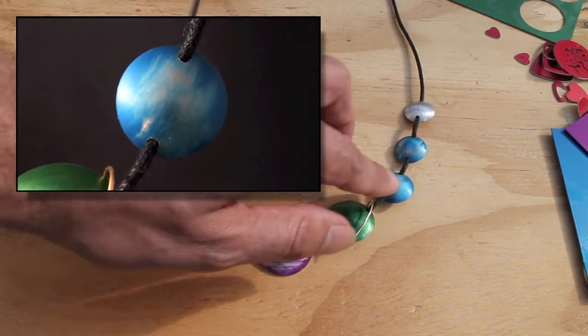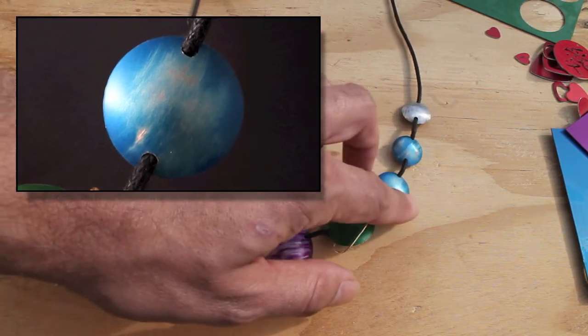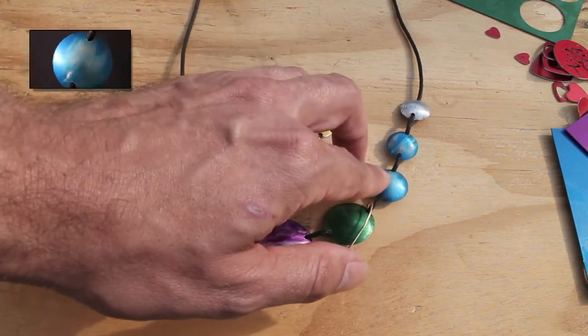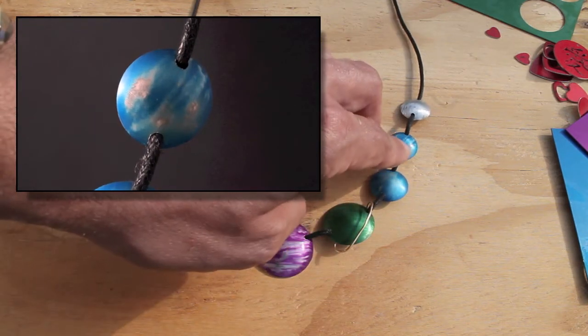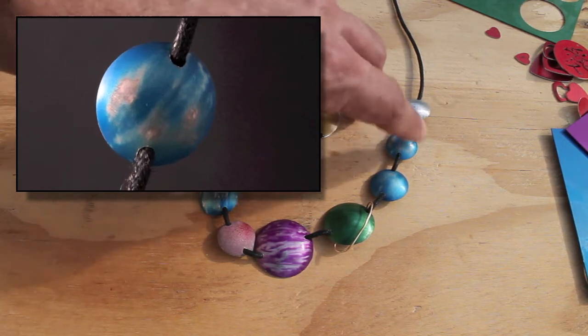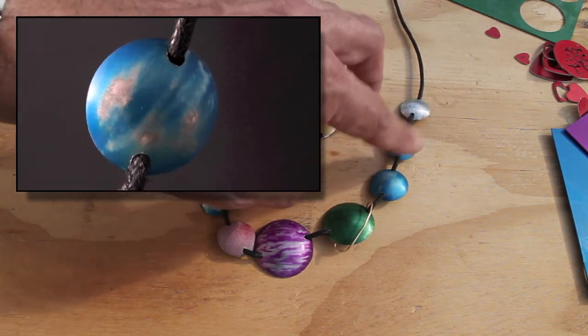These are Neptune and Uranus, and again, these were done with the brass brush. Very soft on this one and a little bit harder on this one. I think I might have even used a steel brush just to touch on that, just to get a few paler areas.